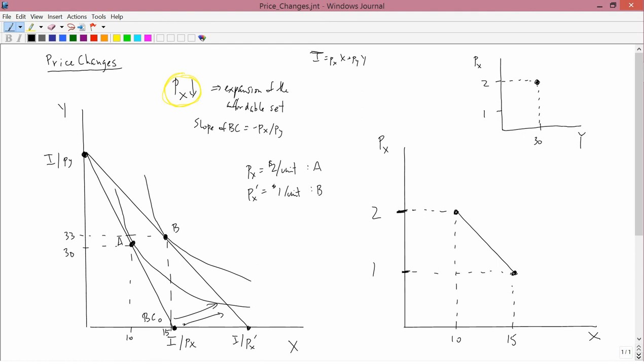Then, when the price of X has fallen to 1, you have point B. The consumption of Y in my graph has gone up to 33. So when the price of X falls to 1, the consumption of Y goes to 33. You can also join these with a line.